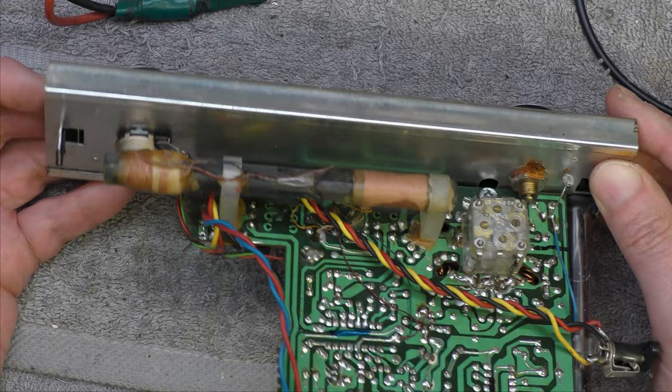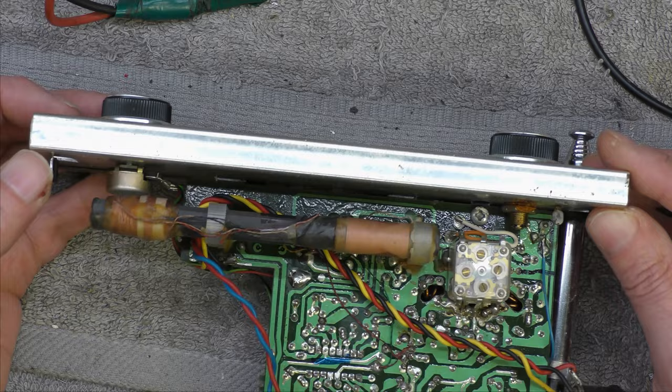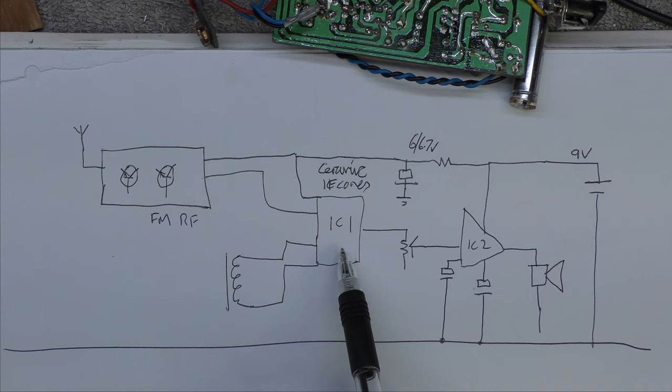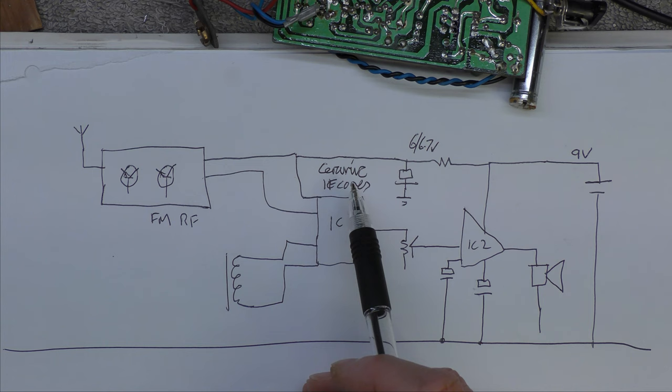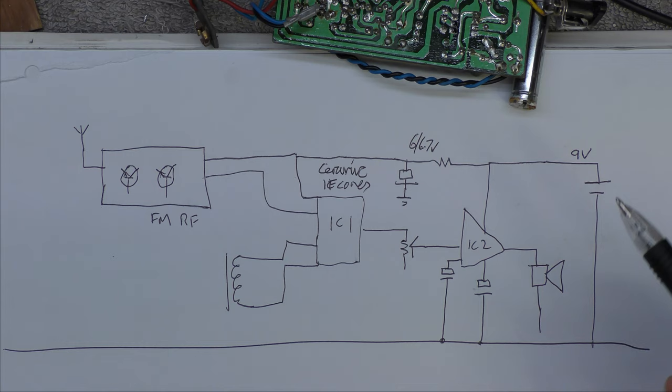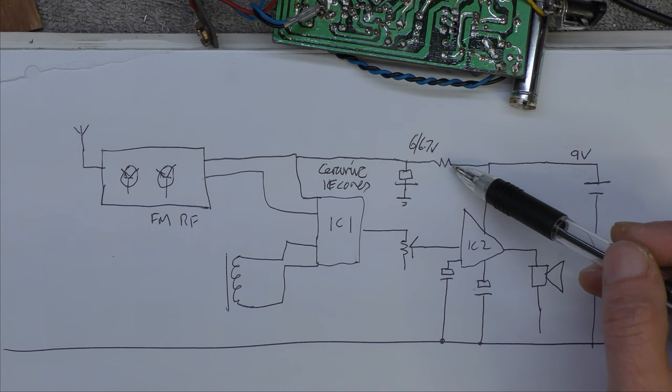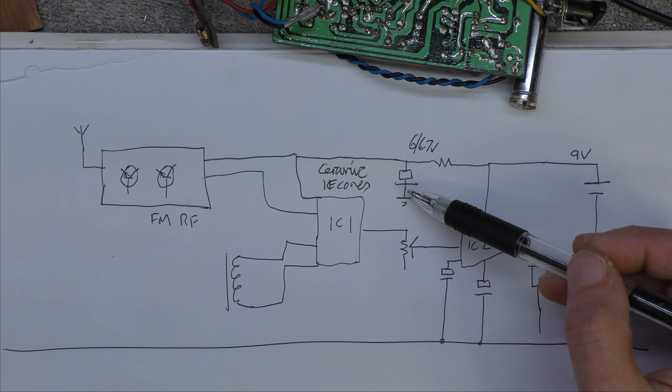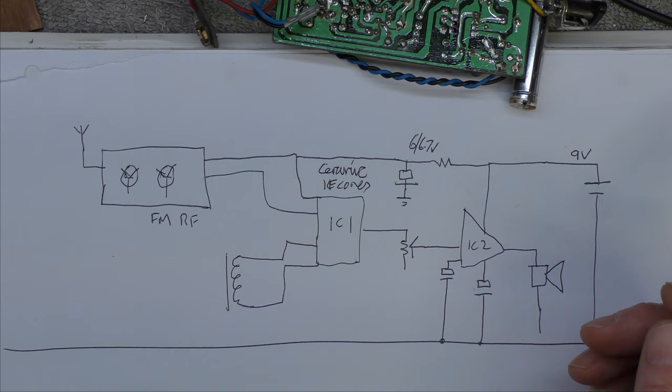So, yes, this is the ferrite rod. A very large tuning capacitor. Just looking at the block diagrams, the ferrite rod does go to IC1. The FM RF output goes to IC1 as well. It's got some ceramic filters, as well as some IF cores. Then that goes to the volume control, and then to IC2. Power supply, the 9V goes to the audio amplifier chip. Through a dropper resistor here, and coupling capacitor to the RF circuit.